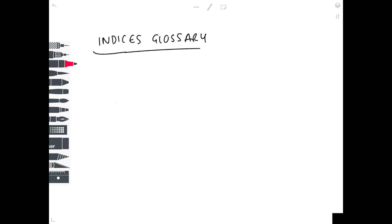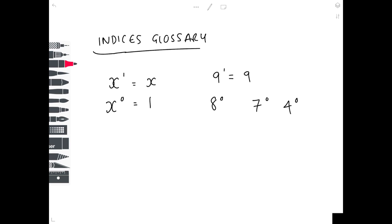Other things to be aware of: anything to the power of 1 is just the number itself — so 9 to the 1 is 9. Anything to the power of 0 is just 1, whether it's 8 to the 0, 7 to the 0, or 4 to the 0 — they all equal 1. And 0 to the 0 also equals 1.